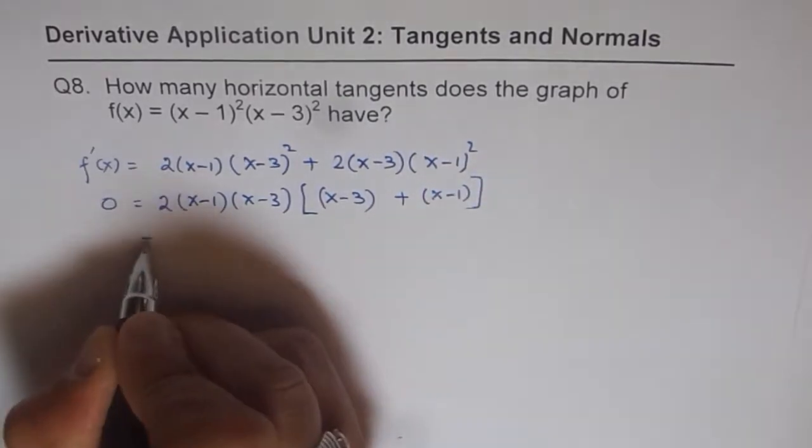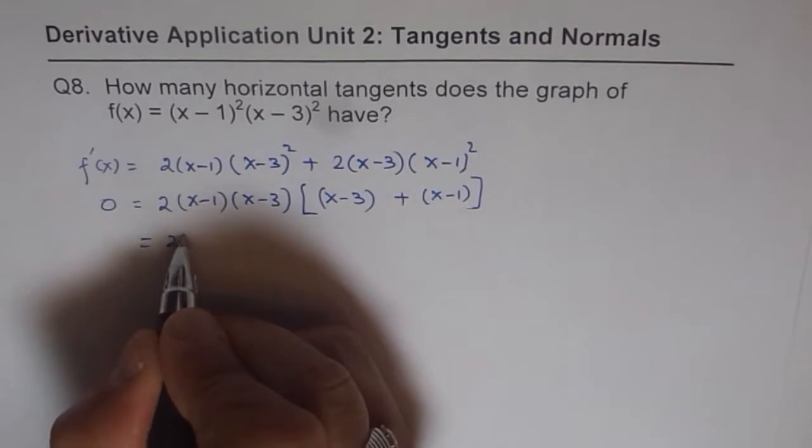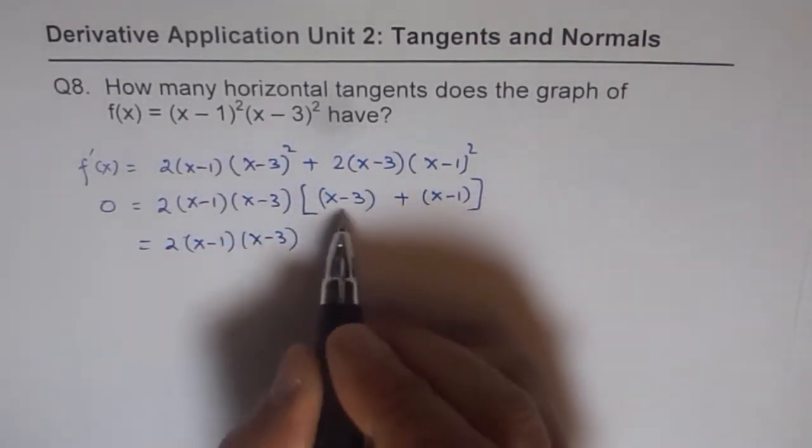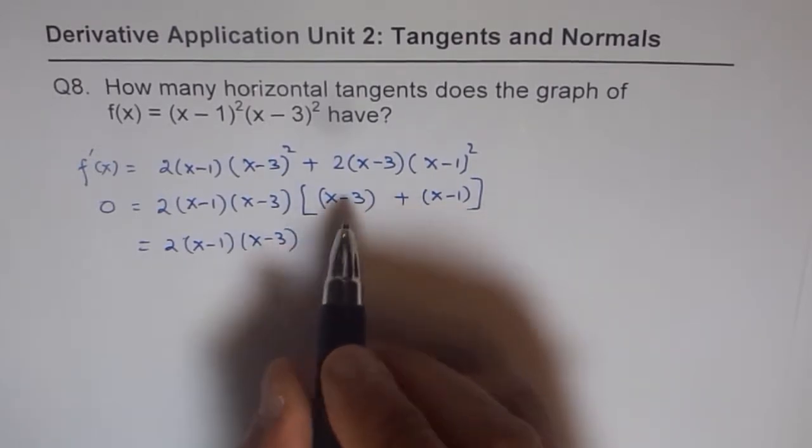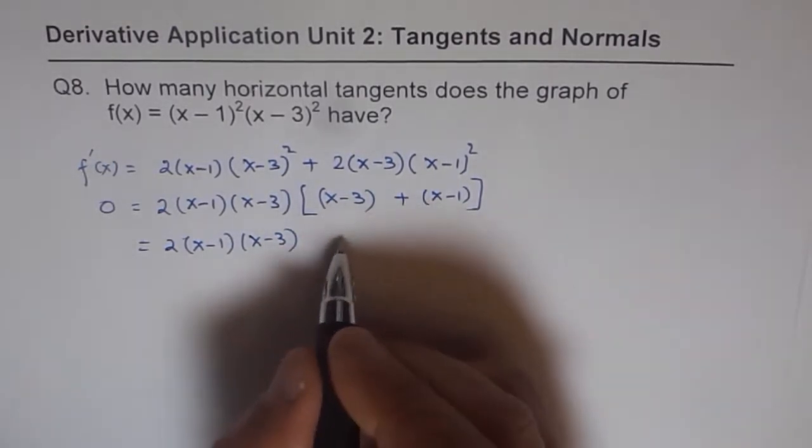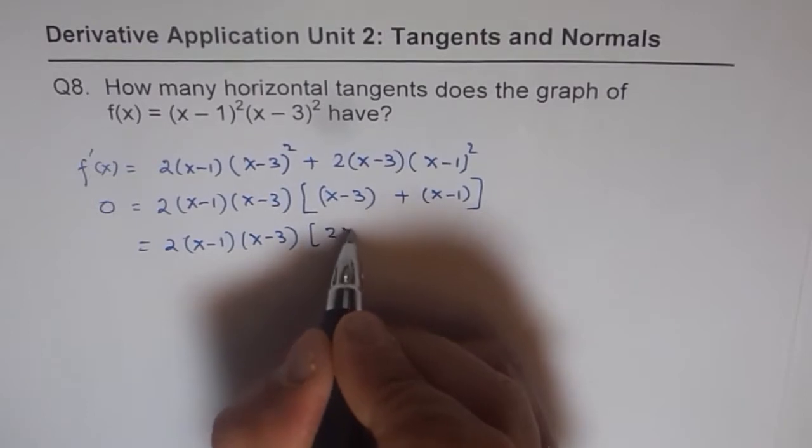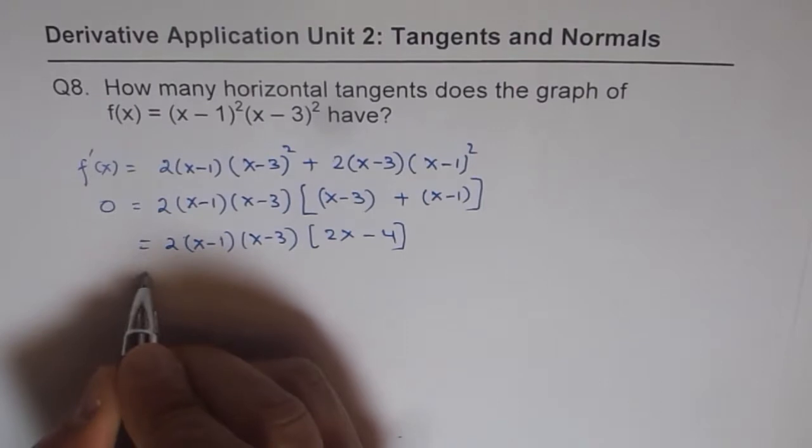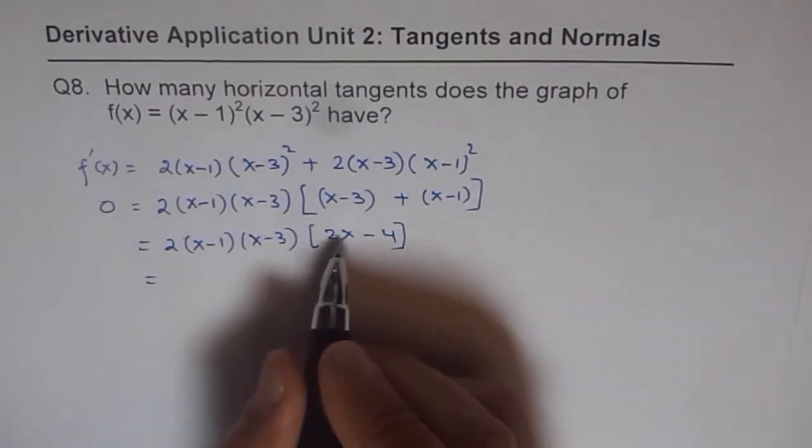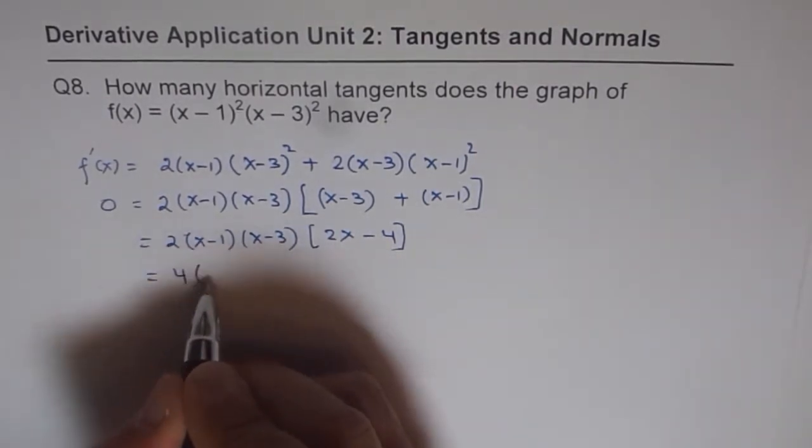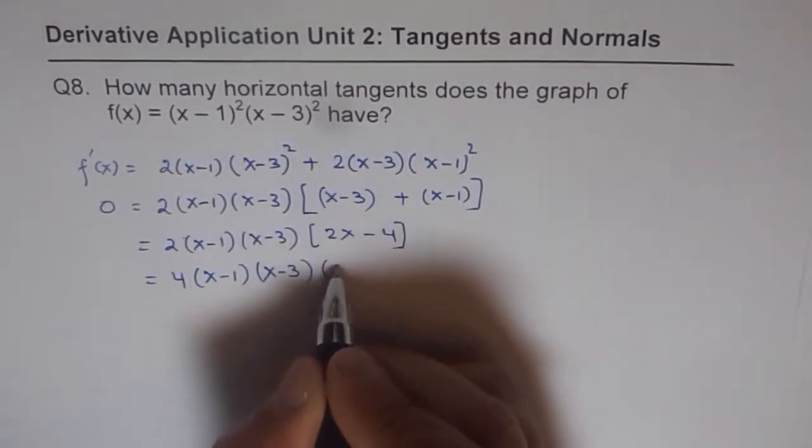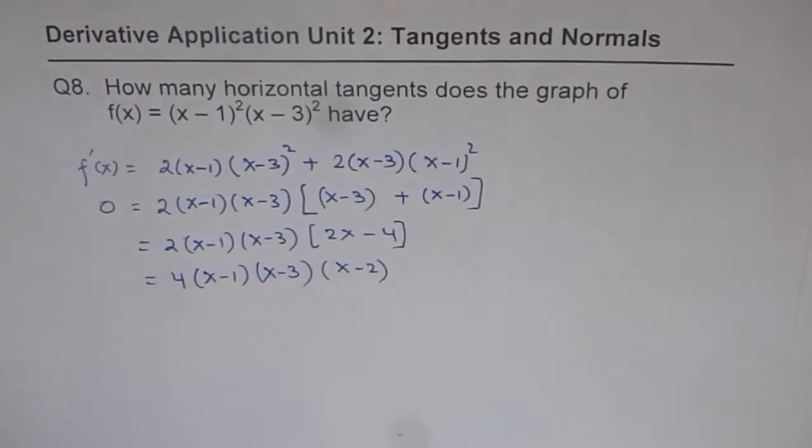So, that is how we can factor it. Now, it could be written as 2(x-1)(x-3) and within bracket, what do we get? x plus x is 2x. So, let's write 2x and minus 3 minus 1 is minus 4. So, that is what we get. We can factor this 2 also out. So it becomes 4(x-1)(x-3)(x-2) equals to 0. That is what we have now.